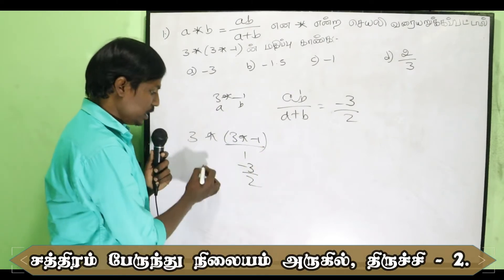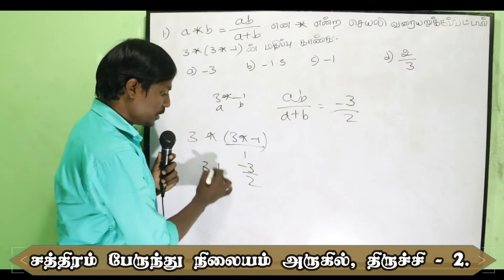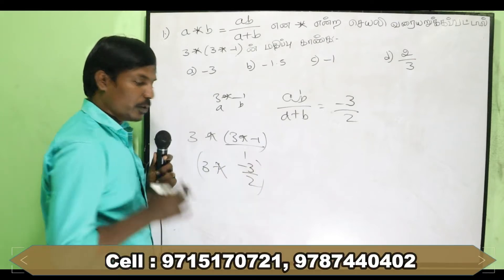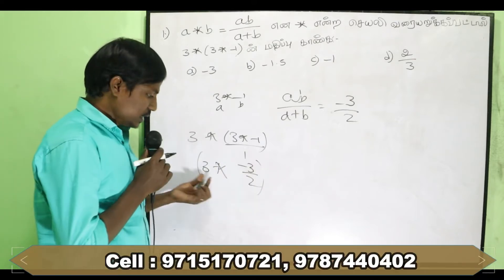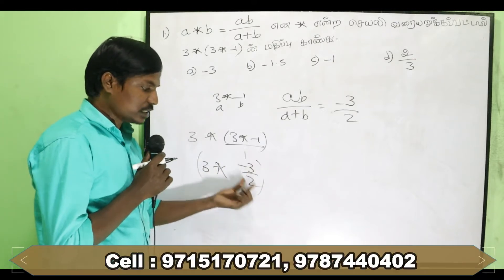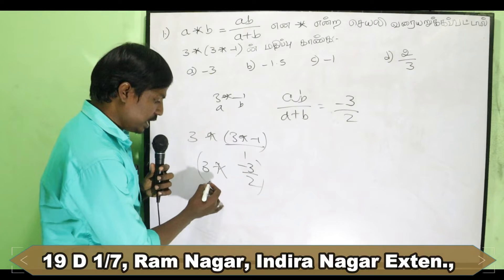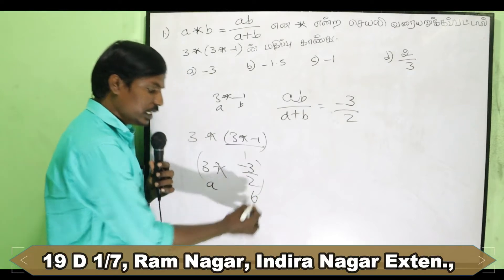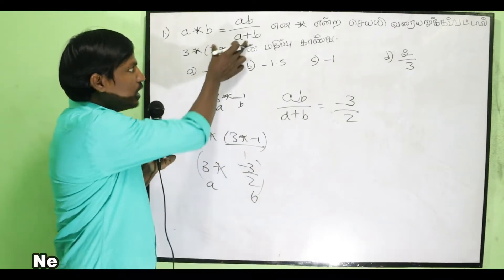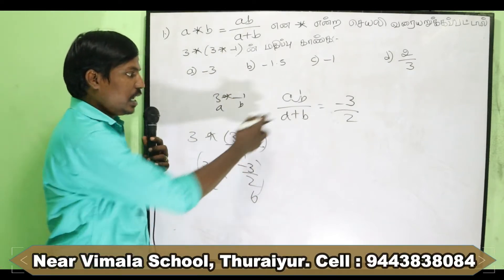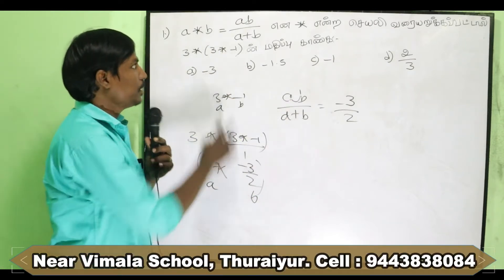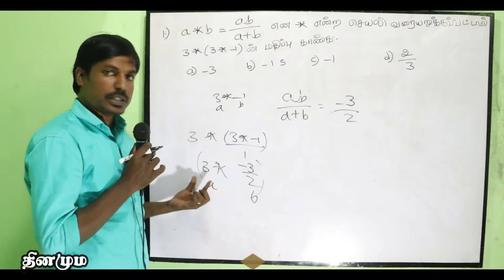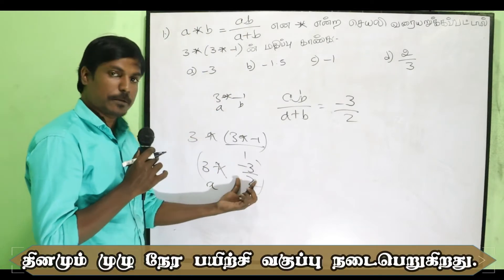So 3 ★ -1 equals minus 3 divided by 2. That gives us minus 3 by 2 as the value of the inner bracket. Now we can substitute this back. So we now have 3 ★ (minus 3 by 2). Here a equals 3 and b equals minus 3 by 2.